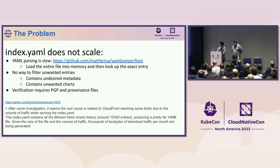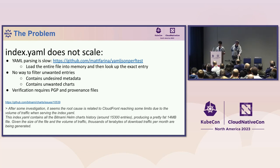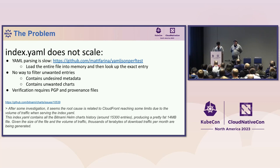Helm repositories can contain hundreds of different charts with thousands of versions, meaning you can end up with a very large index.yaml file with no way to filter out charts or versions you don't care about. Verification requires provenance files, which are another file to manage and distribute. These aren't just theoretical problems — Bitnami's famous Helm repository recently had to purge a significant amount of their index.yaml because CloudFront was unable to serve it due to traffic limits.